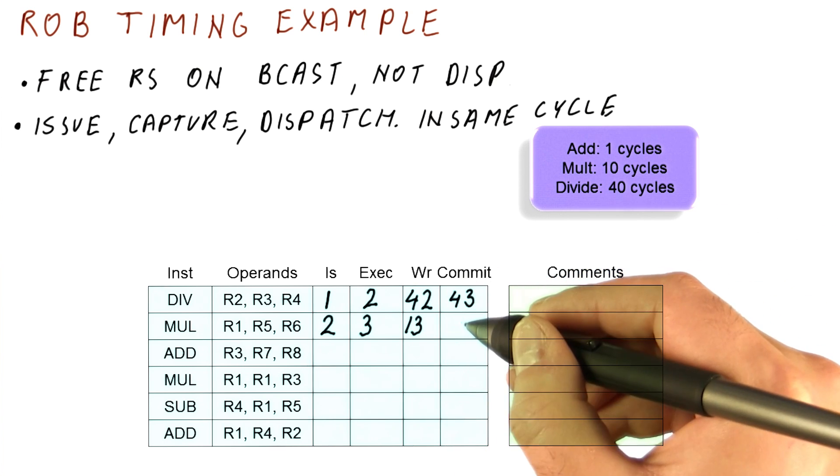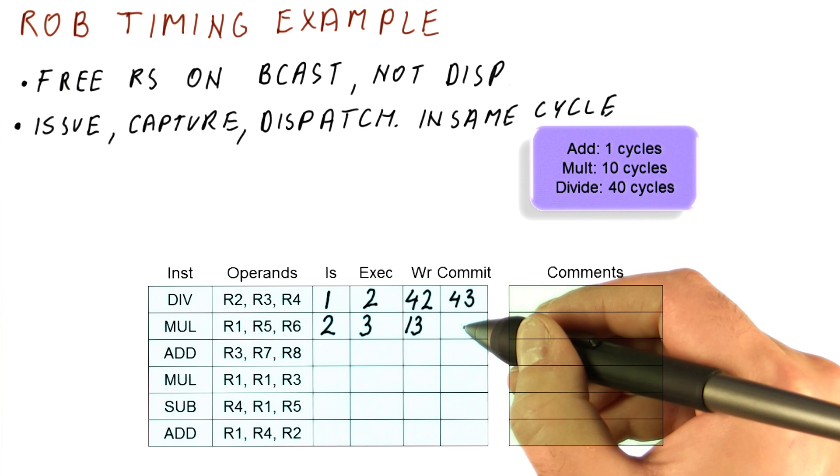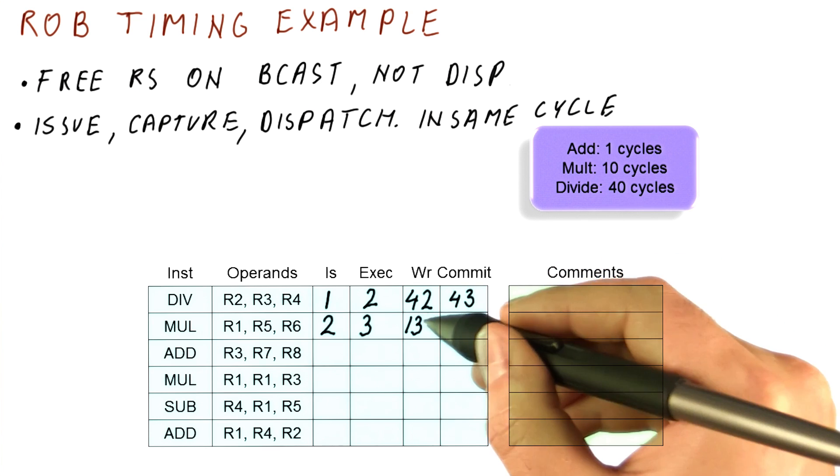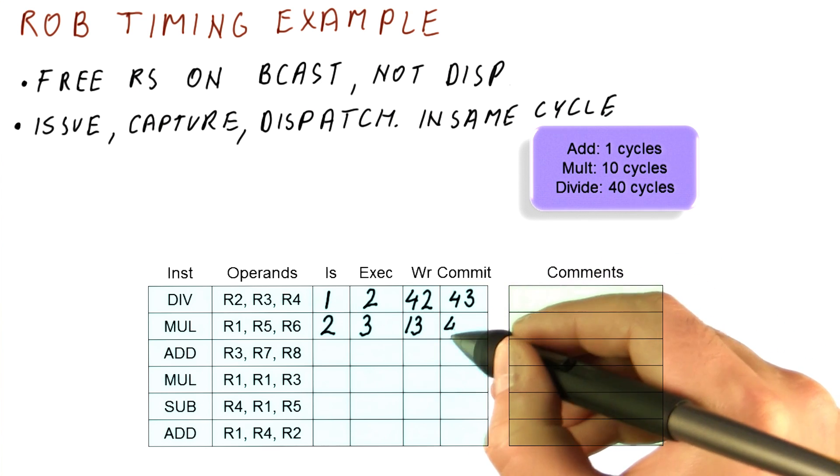And when will we commit? Well, we cannot commit in cycle 14 now. We have to wait for both the previous instruction to commit and for us to have a result, so really we will commit in cycle 44.